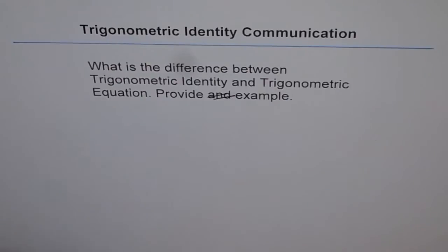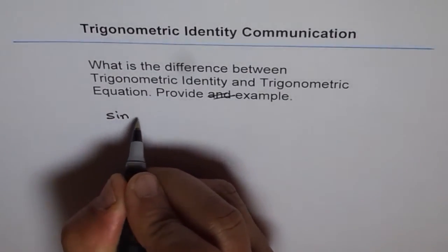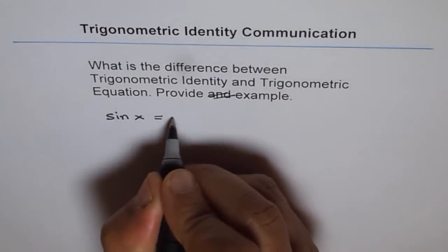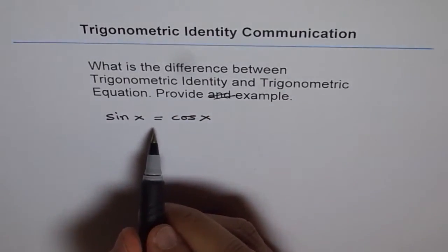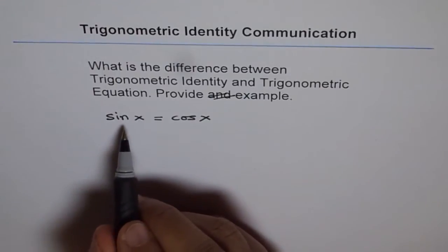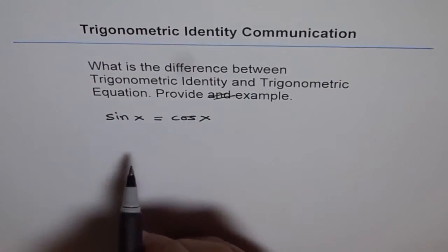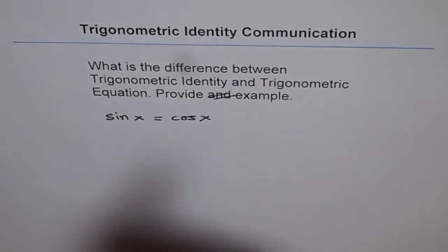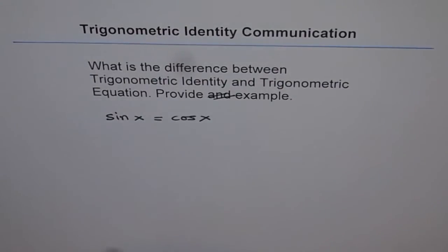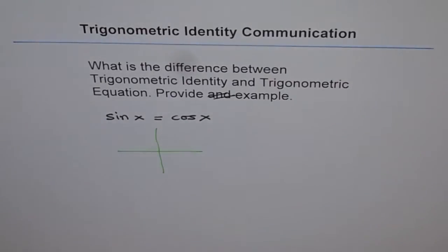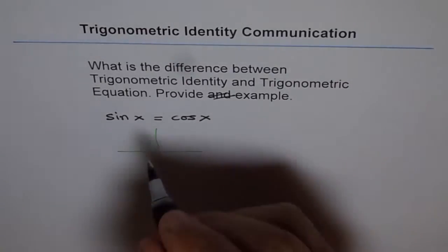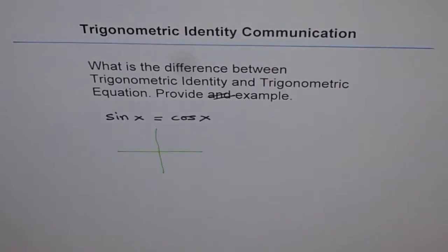If I write sin x equals cos x, then we have an equal sign with something on the left side and something on the right side, so that forms an equation. Now this equation sin x equals cos x could be true for some values. If you look at it, sin x is equal to cos x for the angle 45 degrees.